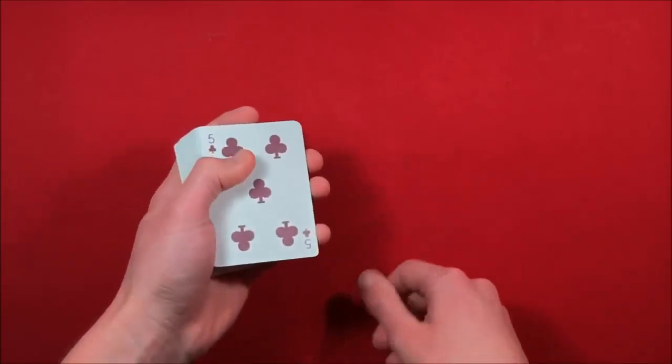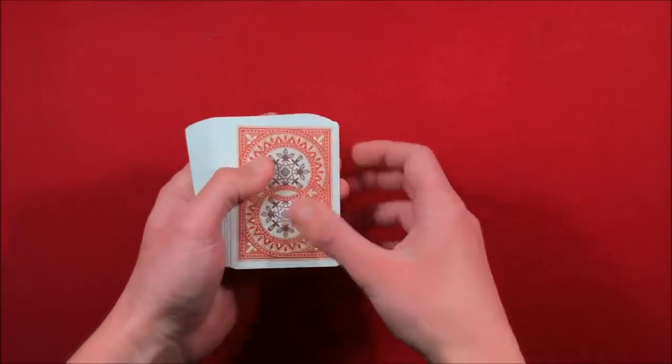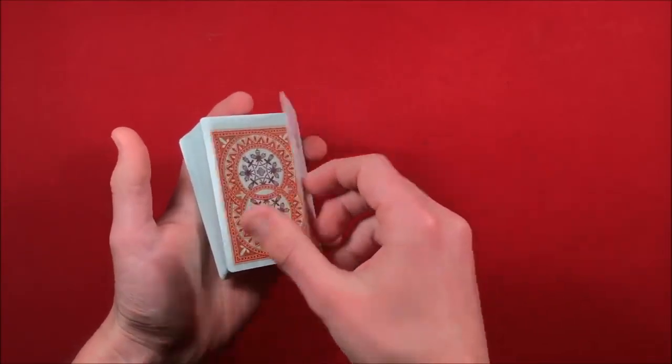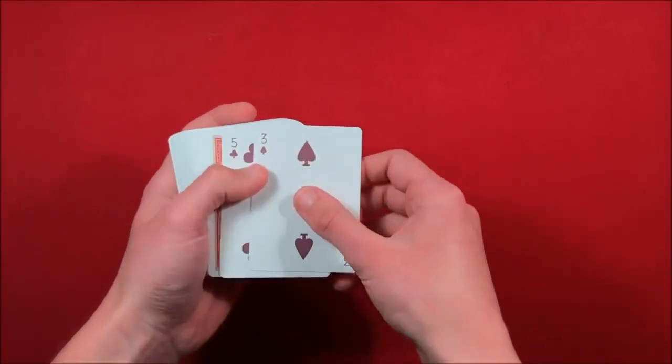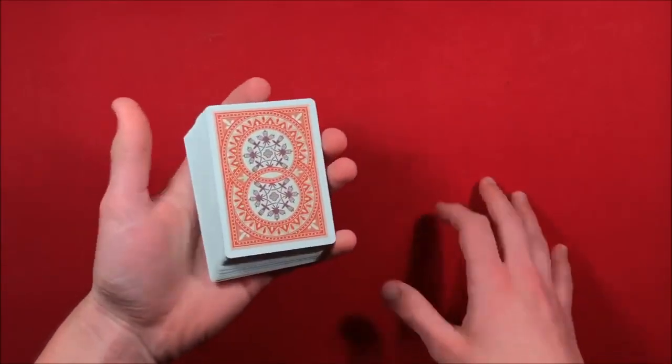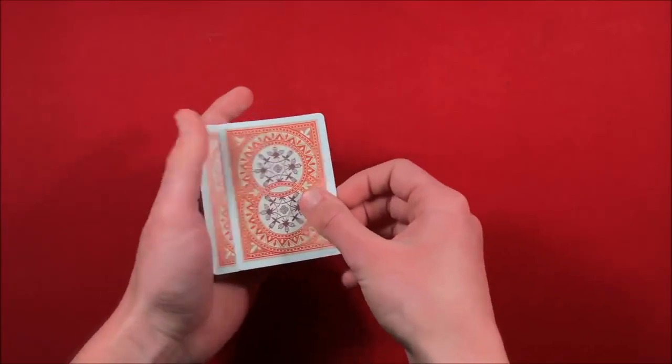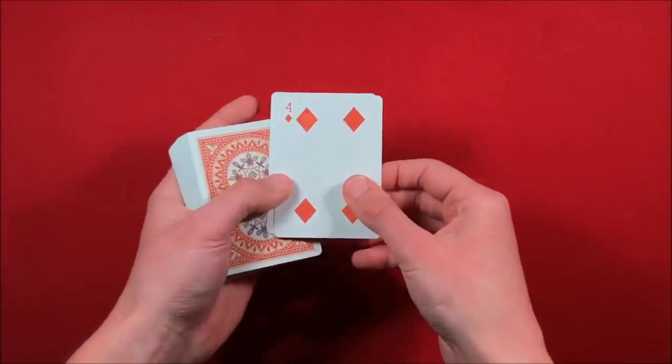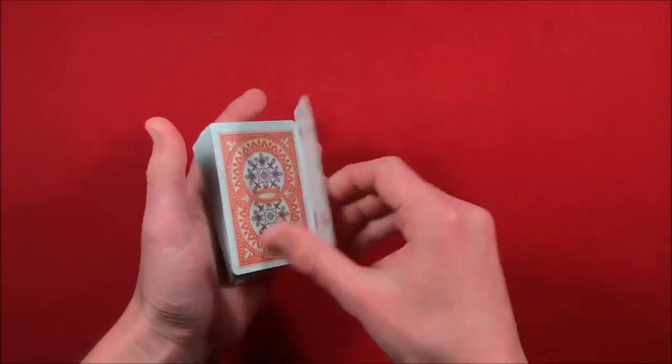So essentially what you're doing is instead of flipping over one card when you're doing the trick, you're actually going to be flipping over two cards to make it look like you're flipping over one. And like I said, this video is directed towards beginners, so when you first do the double lift, don't be discouraged that it's going to look really sloppy, because it takes a while to get it to look smooth like that.